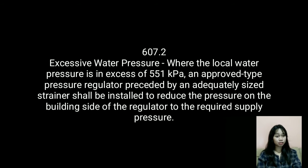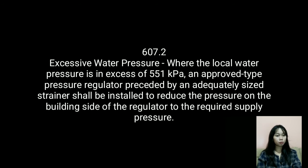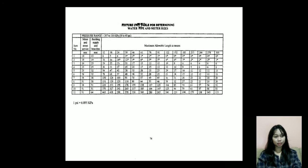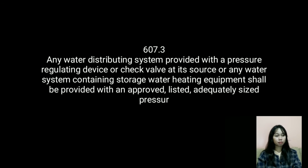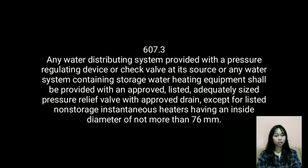Section 607.2 addresses excessive water pressure. Where the local water pressure is in excess of 551 kilopascals, an approved type pressure regulator preceded by an adequately sized strainer shall be installed to reduce the pressure on the building side of the regulator to the required supply pressure. Approved regulators with integral bypasses are acceptable. Each such regulator and strainer shall be accessibly located with the strainer readily accessible for cleaning without removing the regulator body or disconnecting the supply piping. All pipe size determination shall be based on 80 percent of the reduced pressure when using Table 6-6.